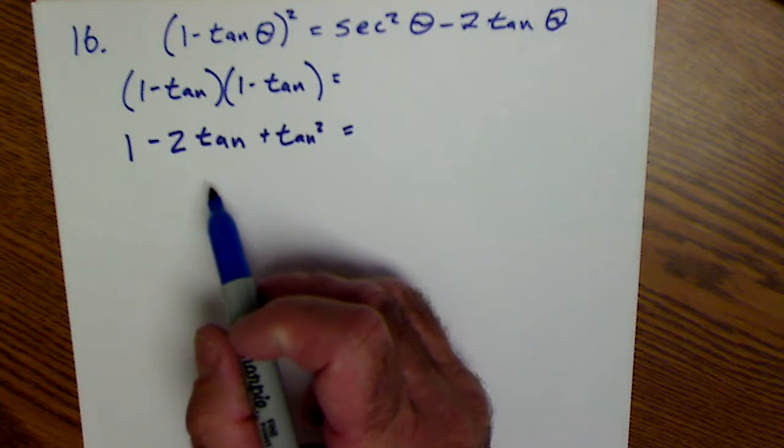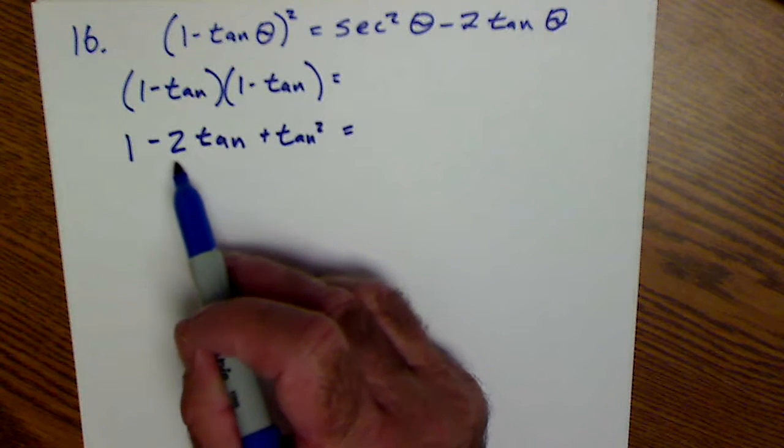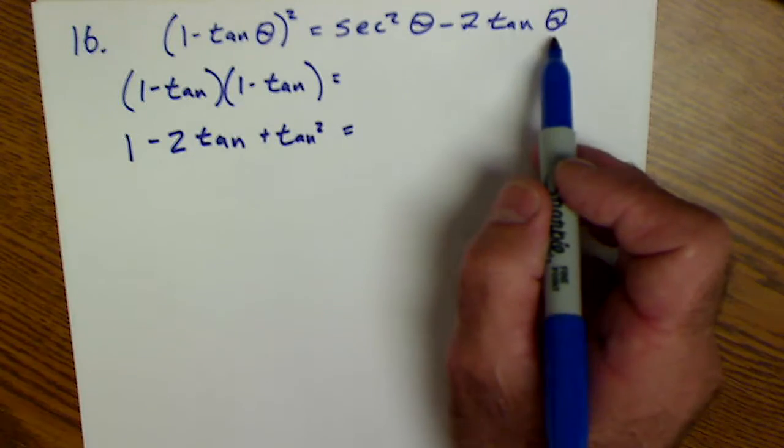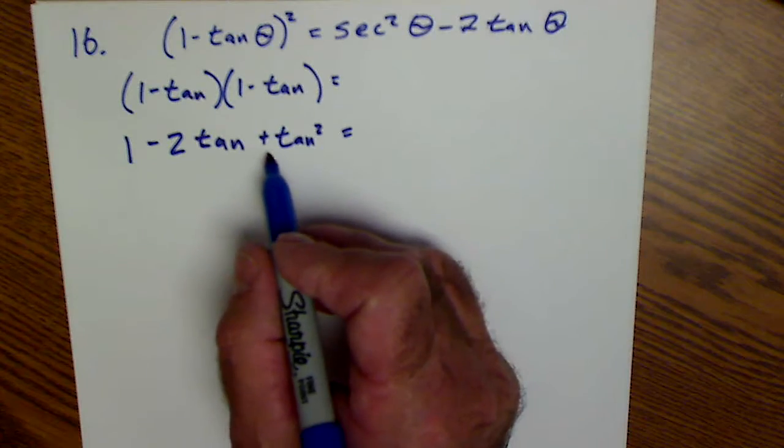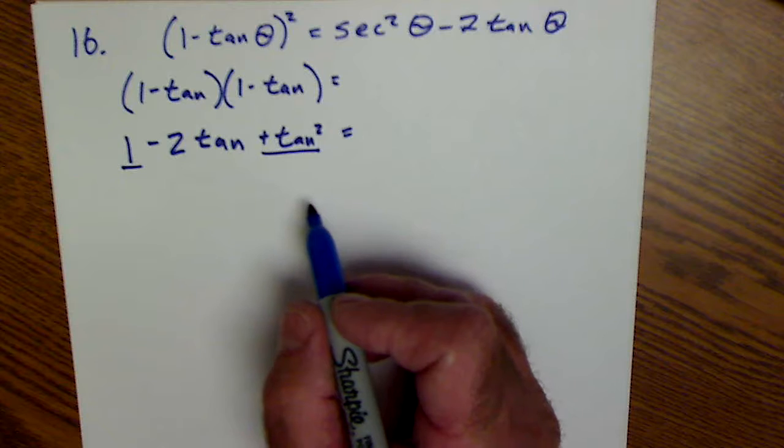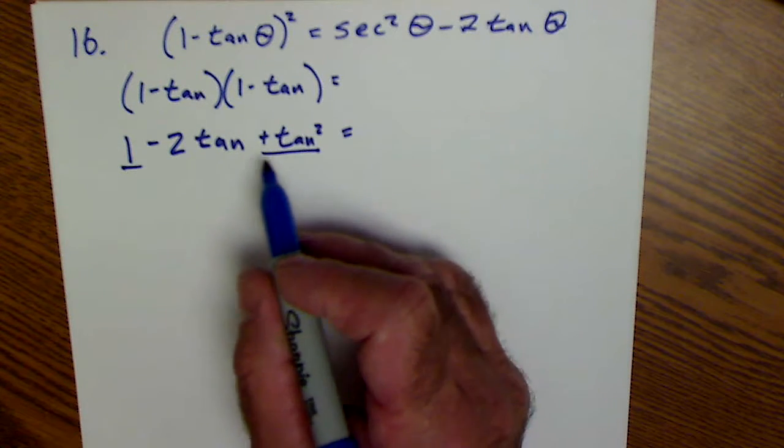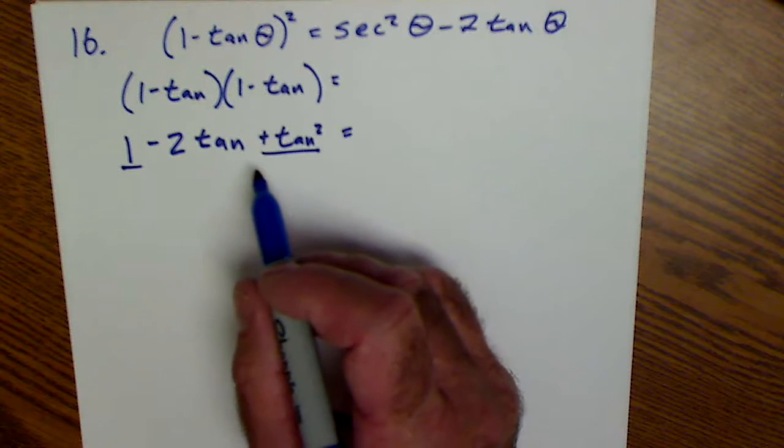I can see right away I'm approaching the right answer because this minus 2 tan is the same as this minus 2 tan of theta. And then anytime I see a square, I'm thinking Pythagorean. I know that tangent squared of theta plus 1 is equal to secant squared of theta.